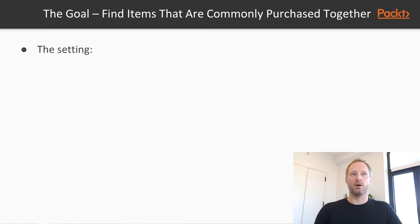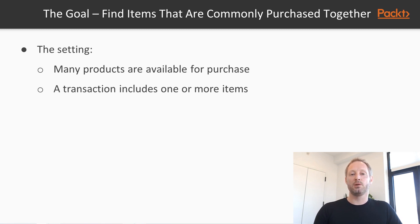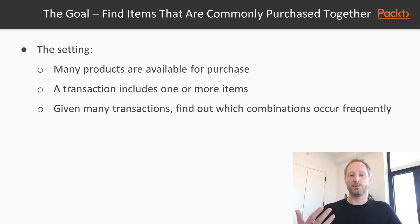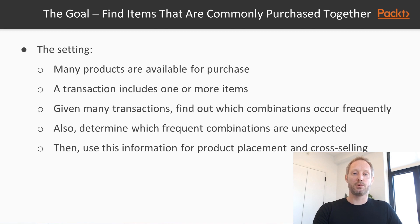The goal of market basket analysis is to find items that are frequently purchased together. Imagine you run a supermarket with a lot of products on the shelf, or an e-commerce store with a large inventory. Your customers make transactions, which always include one or several items from your inventory. Once you have accumulated a lot of transactions, you will be interested to find which combinations of products occur frequently — and even more, which combinations are unexpected, meaning they occur more often than you would expect by chance. This information will put you in a good position to make better use of your marketing budget, to place your products more efficiently, and to actively engage in cross-selling.